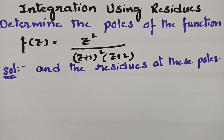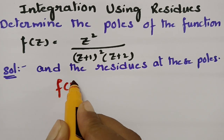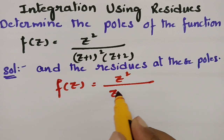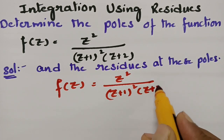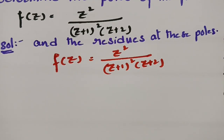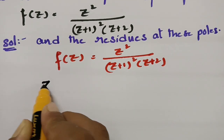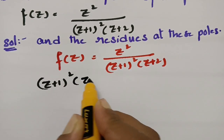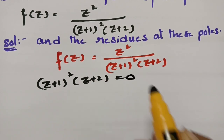In order to find the residues, first of all, what is our f(z) given? f(z) is given as z² / [(z+1)²(z+2)]. For finding the poles we have to equate the denominator to 0. The denominator is (z+1)²(z+2) = 0.